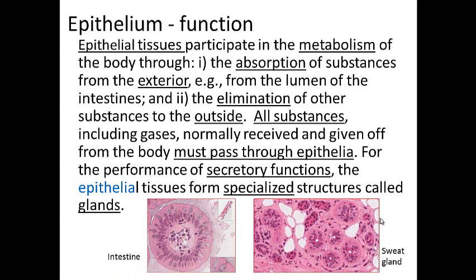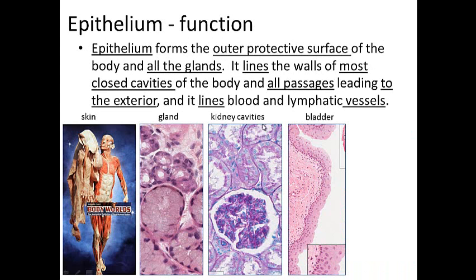Epithelial tissue participates in metabolism throughout the body, including absorption of things from the exterior. Foodstuffs or water comes through epithelium; elimination of things from the outside goes through epithelium — in our GI tract, in our urinary tract. All substances, including gases that are normally received or given off by the body, must pass through epithelium. For the performance of secretory functions, epithelium of a certain type forms what we call glands.